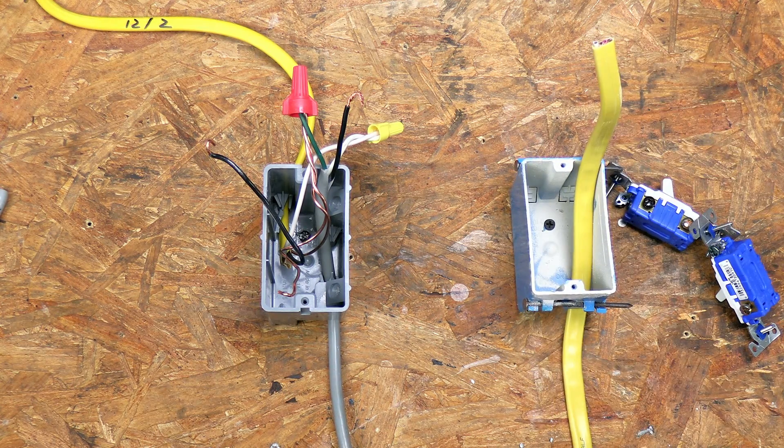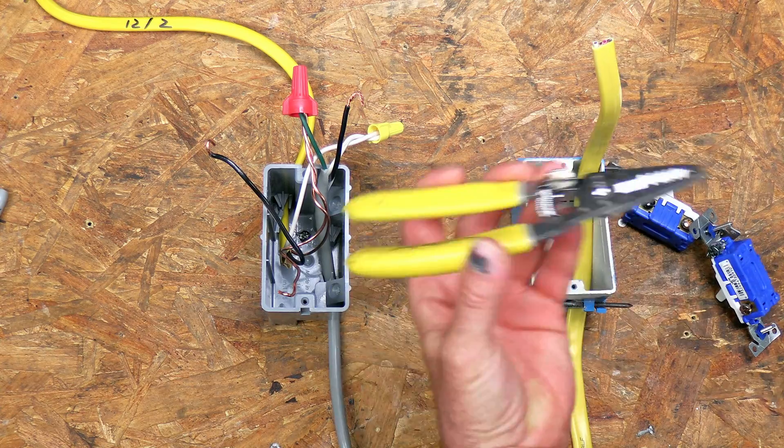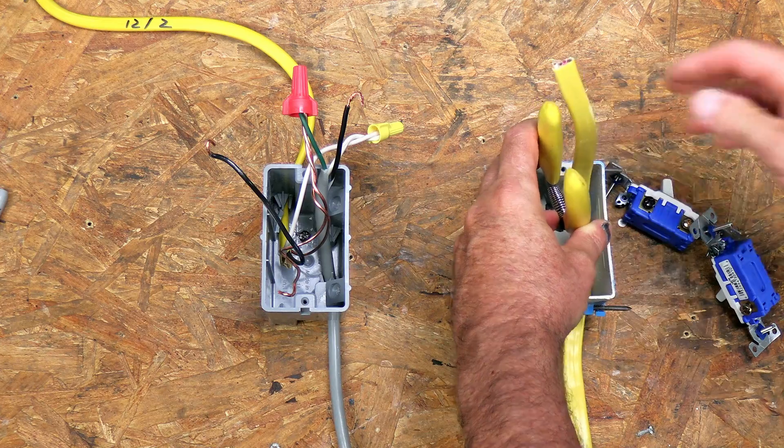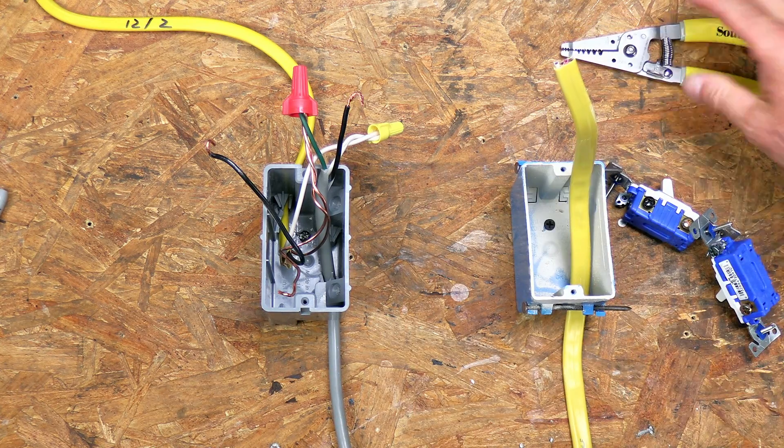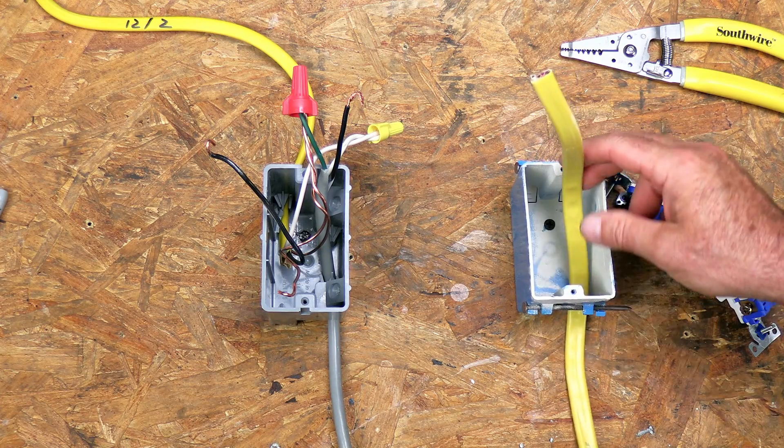Now I usually like to leave about 8 inches from the back of the box. My pliers are approximately 8 inches long, so I will run it approximately the length of the pliers. I think the code is 6 inches from the back of the box, but I actually like just a little bit extra wire right there.